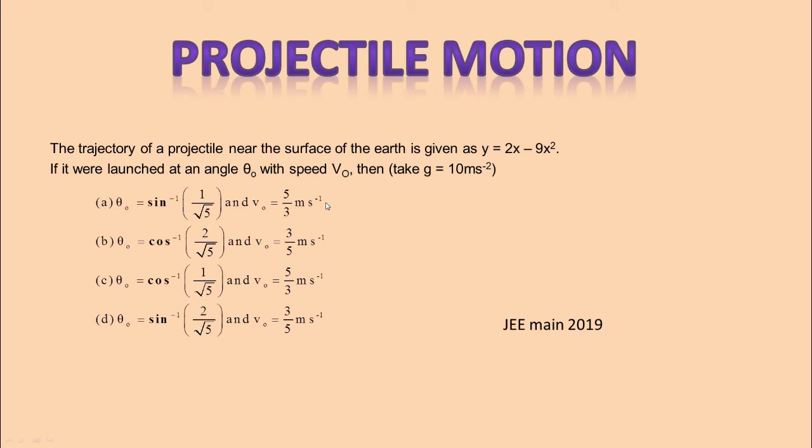Option B: θ₀ is equal to cos inverse of 2 by root 5 and v₀ is equal to 3 by 5 meter per second. Option C: θ₀ is equal to cos inverse 1 by root 5 and v₀ is equal to 5 by 3 meter per second.